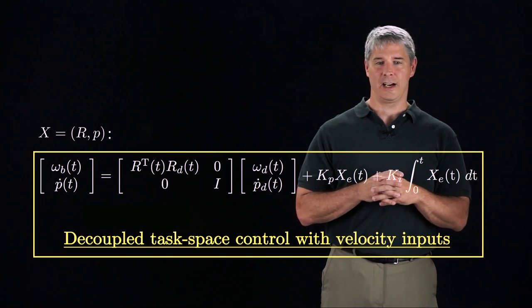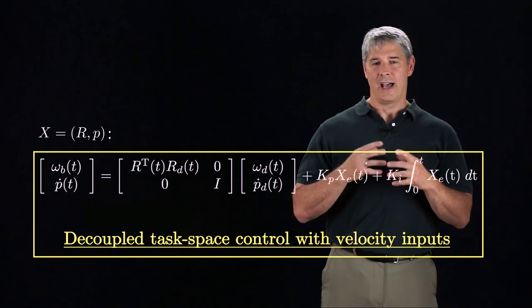The resulting control law is a decoupled task space controller with velocity controls. As an example,